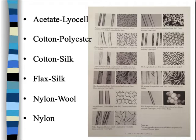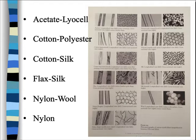Looking at the fiber surface images: the left column shows acetate; the right column shows lyocell, cotton, polyester, cotton, silk, flax, silk, nylon, wool, and nylon. Not all cotton looks exactly the same, and the two silks — one is a tussah silk and the other appears to be a cultivated silk — look wildly different. Things found in nature tend to look a little different. With manufactured fibers, we can alter them to whatever we want.